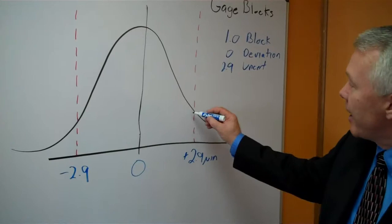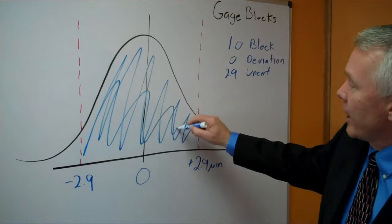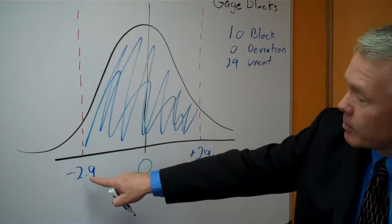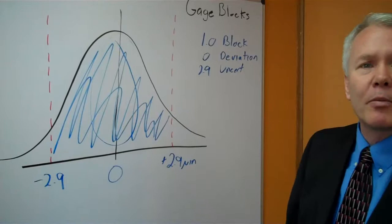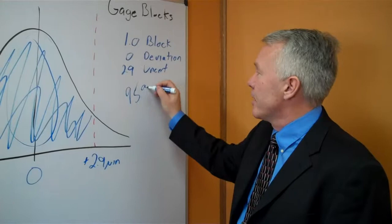But there's a 95% probability that it's going to fall somewhere in that range. We're reporting zero. Now, there's a possibility it could be larger, there's a possibility it could be smaller, but the majority of it centers around that zero point with less probability that it's going to be outside.